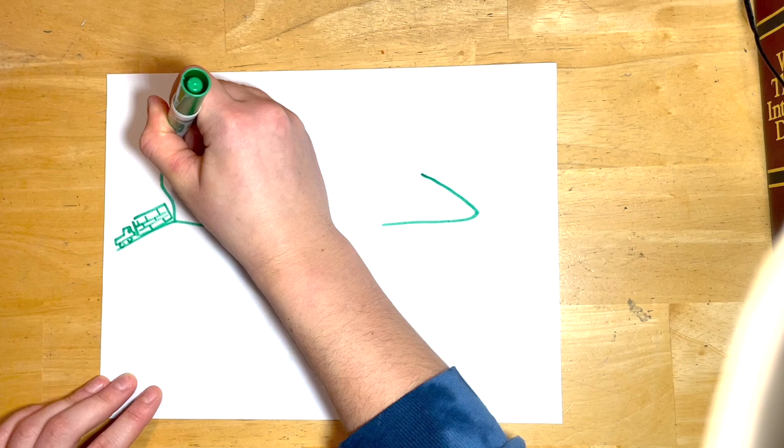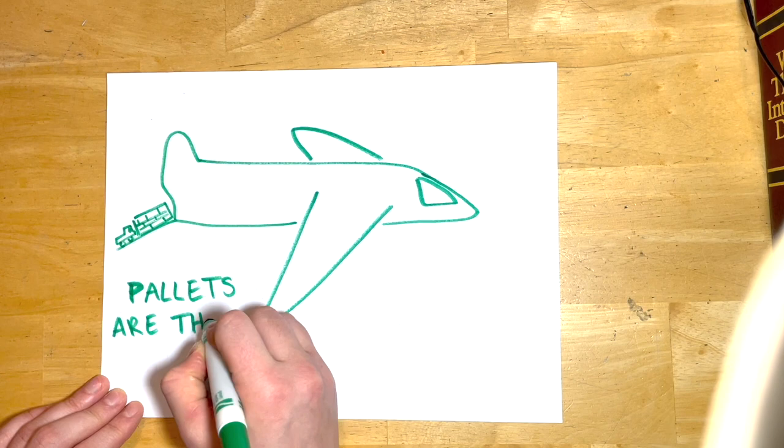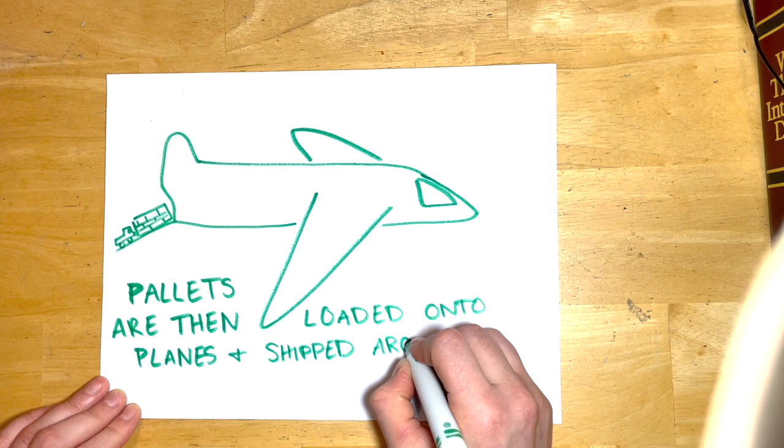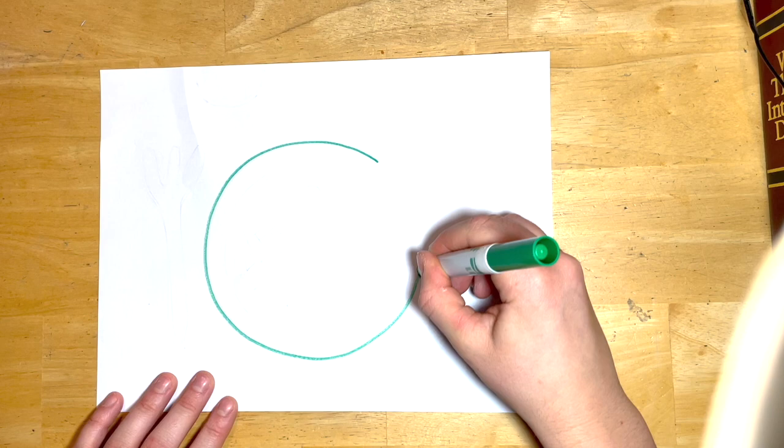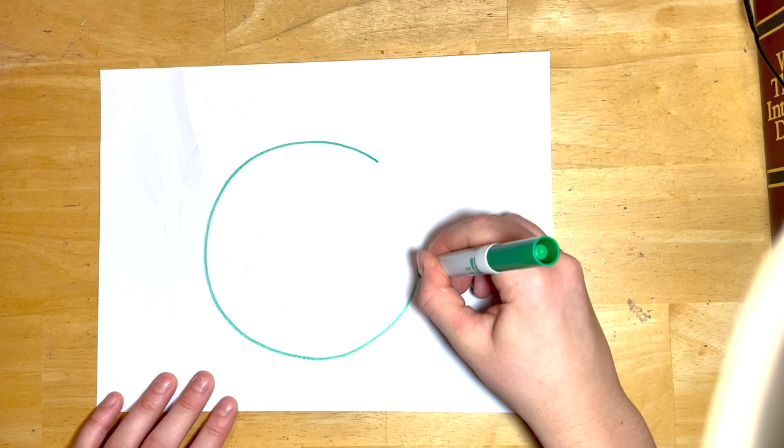And then they're loaded onto airplanes. This is not the most accurate drawing, but smaller airplanes, imagine that, and then they're shipped out to communities and families in need around the state, so that we can all have food on our plate at dinner time and breakfast and lunch. Yeah, thank you.